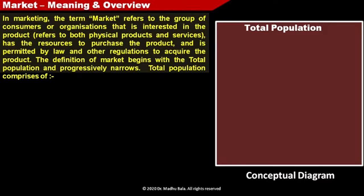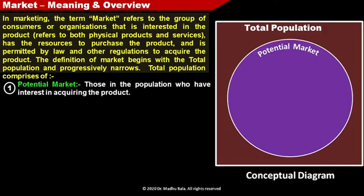The definition of market begins with the total population and progressively narrows. Total population comprises of the potential market. Potential market means that group of people in the population who have interest in acquiring the product — meaning they want to buy the product of the organization.